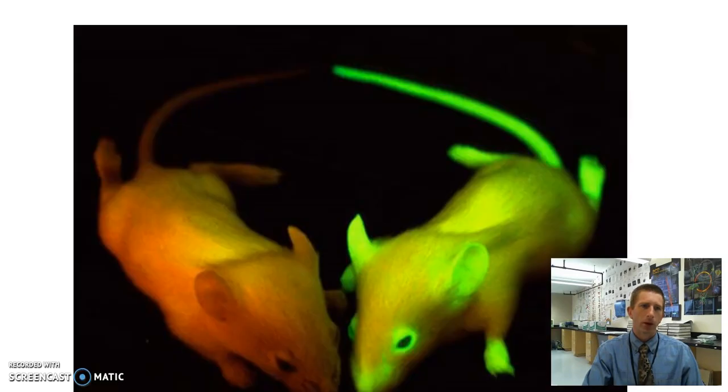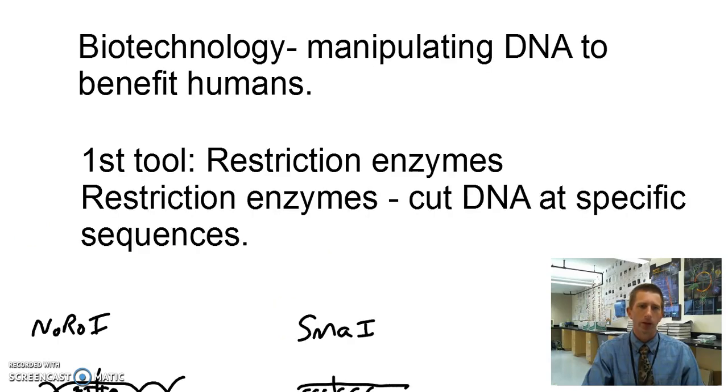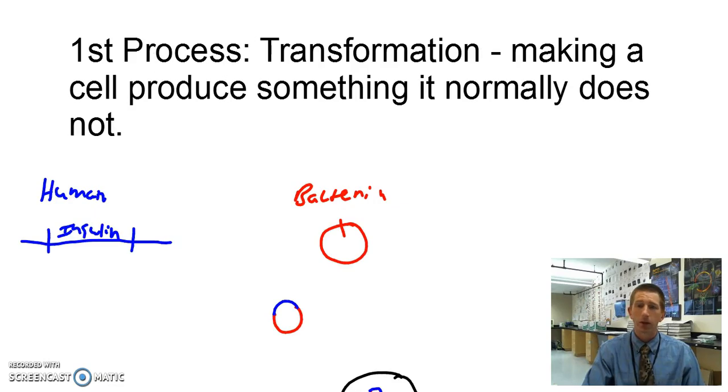So let's review very quickly: chapter 12 DNA, chapter 13 transcription translation, chapter 15 biotechnology. Our first tool was restriction enzymes, cuts DNA in specific sequences, and our first process was transformation, making a cell produce something that it normally doesn't, like bacteria producing insulin, or like bacteria or fish or mice or rabbits or chimpanzees producing the green fluorescent protein. So that's it for me. Thanks so much for watching and I will see you on the flip side.